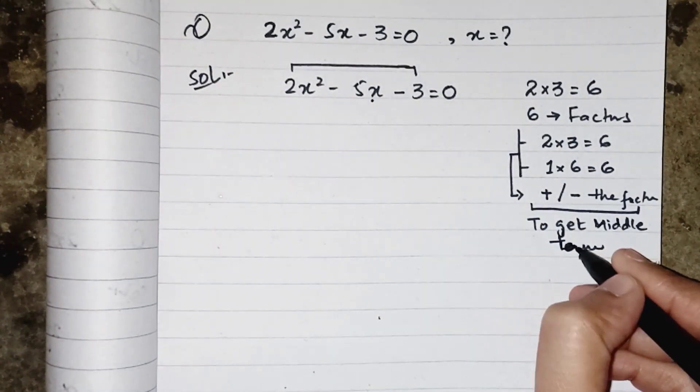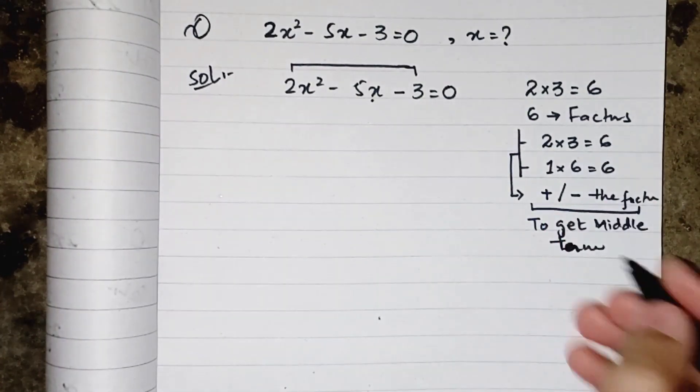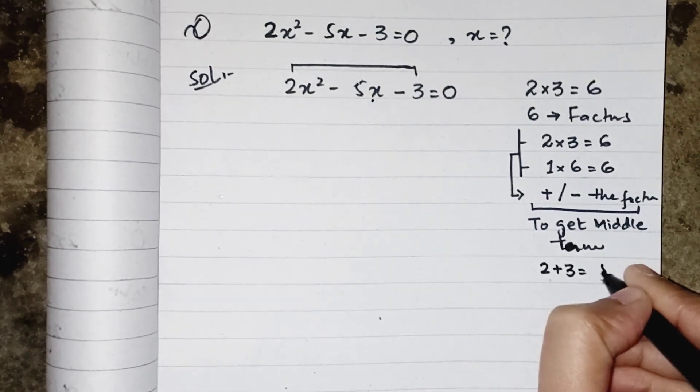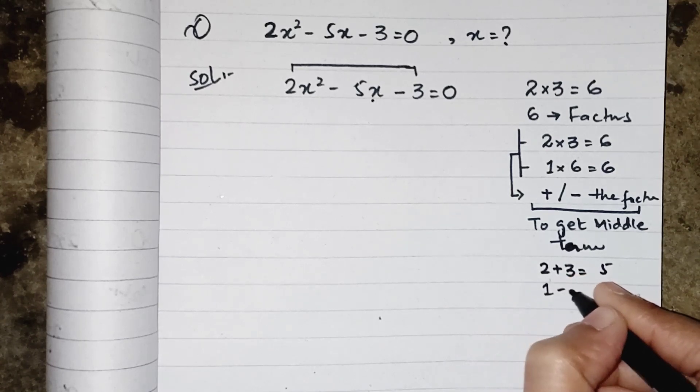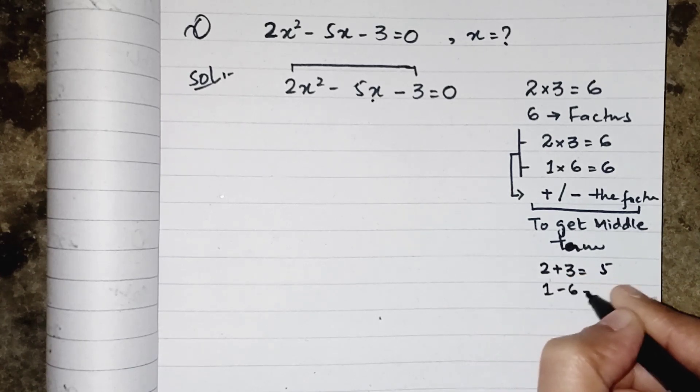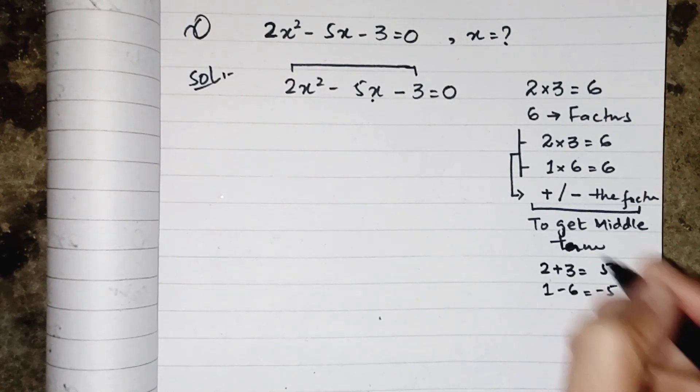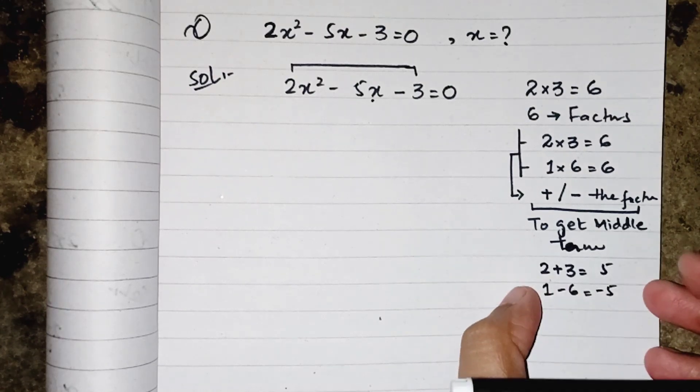We will see that over here we have factors 2 and 3. If we add them, it will result as 5. Similarly if we subtract 1 and 6, it will result also as 5. It doesn't matter either it's plus 5 or minus 5, we will sort it out.